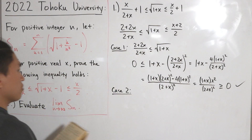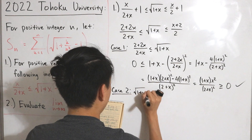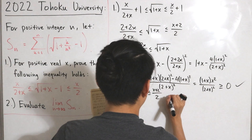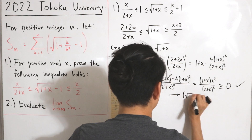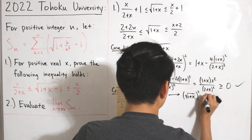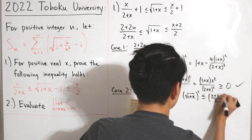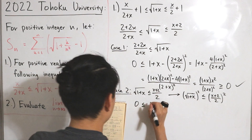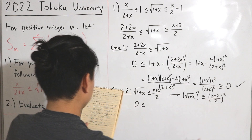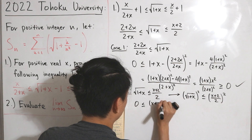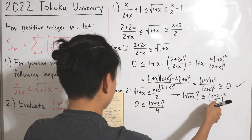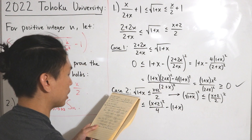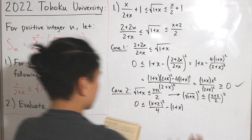Now for the center-right: we need to show √(1+x) ≤ (x+2)/2. Squaring both sides gives (√(1+x))² ≤ ((x+2)/2)², so 1+x ≤ (x+2)²/4. Subtracting (1+x) from both sides, we need to show 0 ≤ (x+2)²/4 − (1+x).